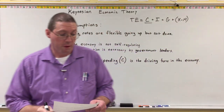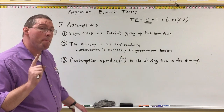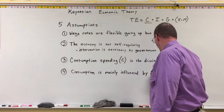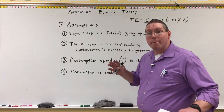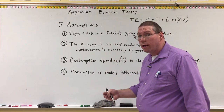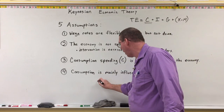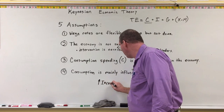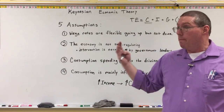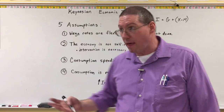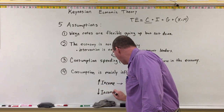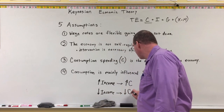The fourth assumption is that consumption is mainly influenced by income. The primary thing affecting whether consumption goes up or down is household income — how much money households earn. When income goes up and households have more income, consumption spending goes up. If individuals have more money in their pocket, they're able to and will spend more money. But if income goes down, meaning households have less money, then consumption will go down. Most other considerations are not as heavily a cause of consumption.